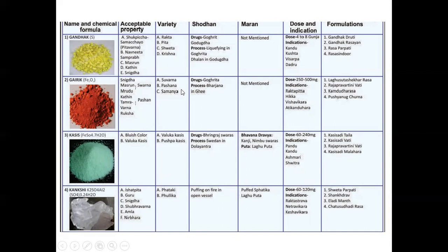The types are Suvarna Gairik, Pashana Gairik and Samanya Gairik. About the Shodhana purification, Goguruta is used and bharjana in ghee. Bharjana process in ghee is done to purify this particular Gairik. Marana is not mentioned about Gairik.